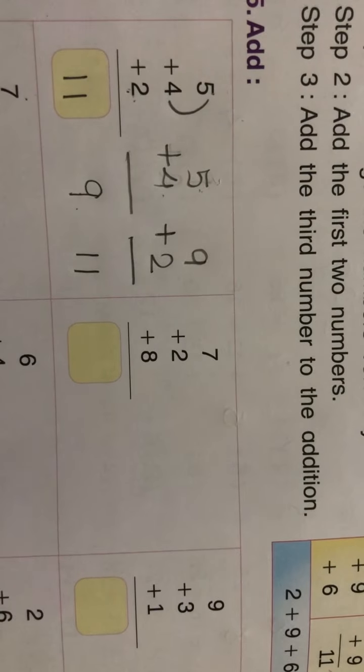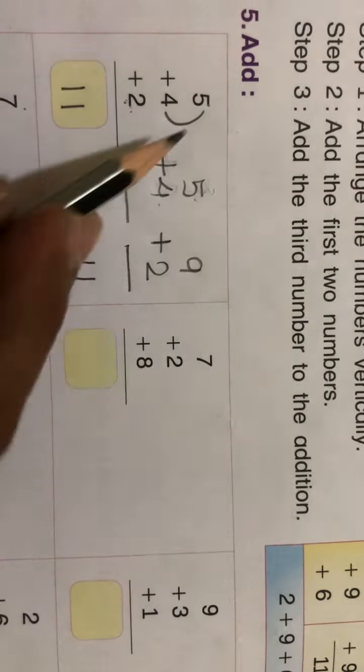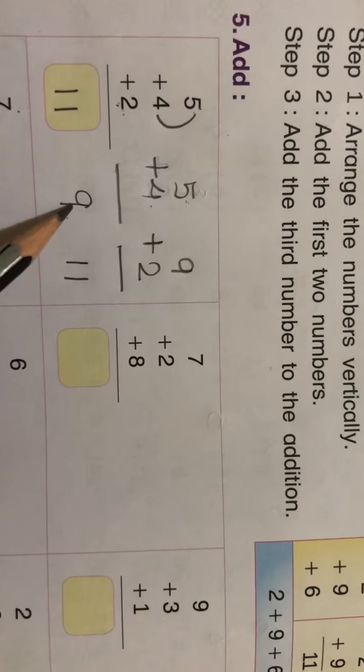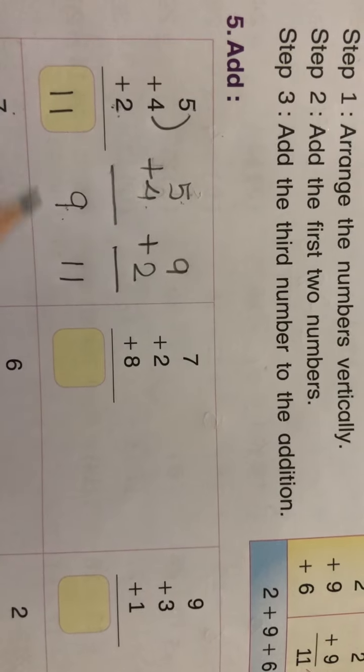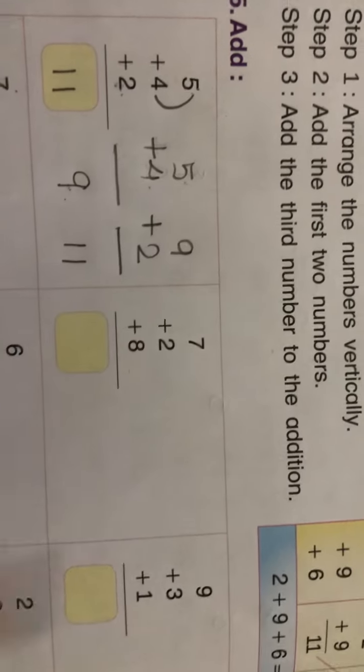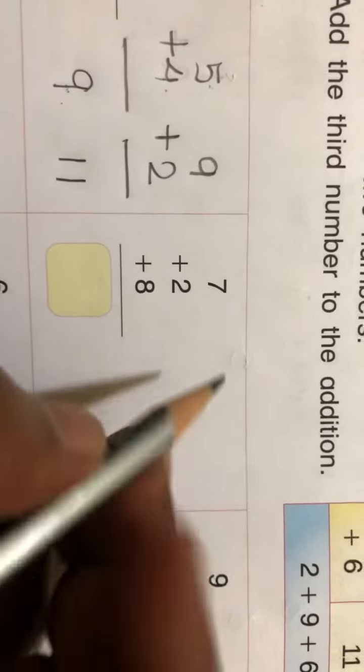So first we got 5 plus 4 which is 9, then we added 2 to get the answer 11. Same way, let's go.